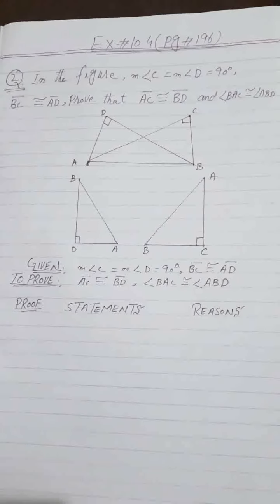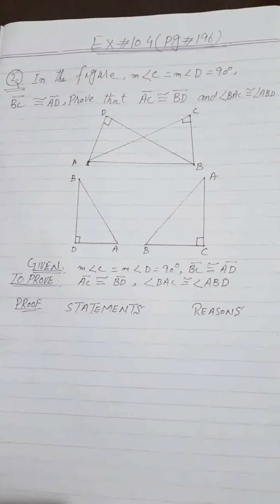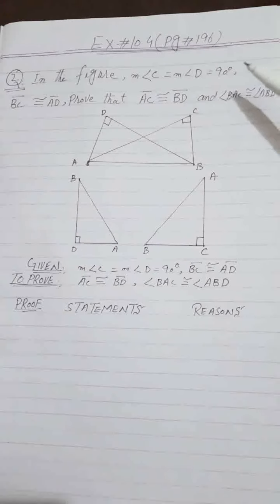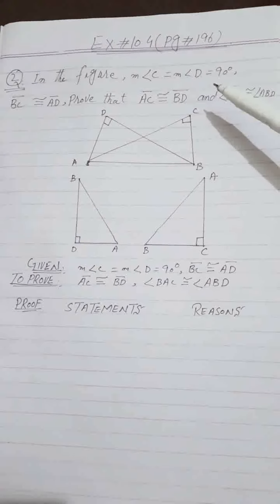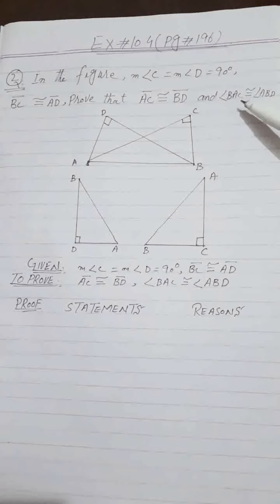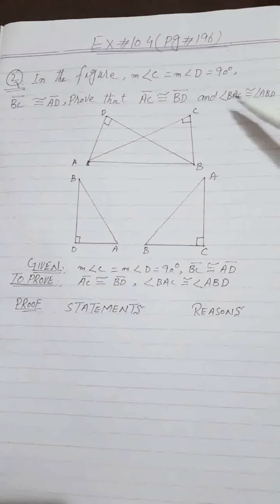Exercise 10.4, question number 2. In the figure, the measurement of angle CDA equals 90 degrees, BC is equal to AD, and we have to prove that AC is congruent to BD, and angle BCA is congruent to angle ABD. These are both proofs.